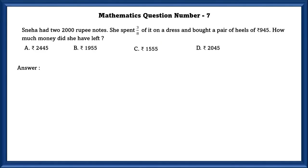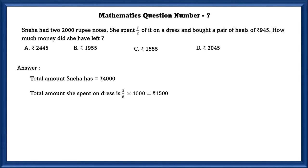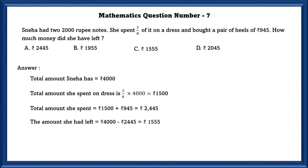Mathematics question number 7. Sneha had a 2,000 rupees note. She spent 3/8 of it on a dress and bought a pair of heels for 945 rupees. How much money did she have left? Total amount Sneha has is 4,000 rupees (2 × 2,000). Amount spent on dress is 3/8 × 4,000 = 1,500. Total amount spent is 1,500 + 945 = 2,445 rupees. The amount she had left is 4,000 − 2,445 = 1,555 rupees.